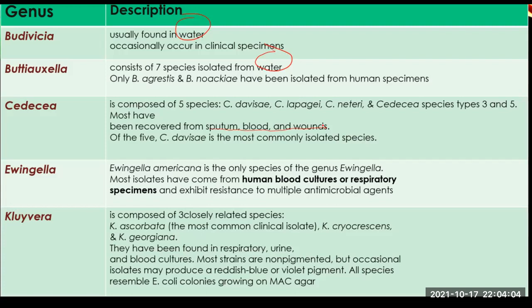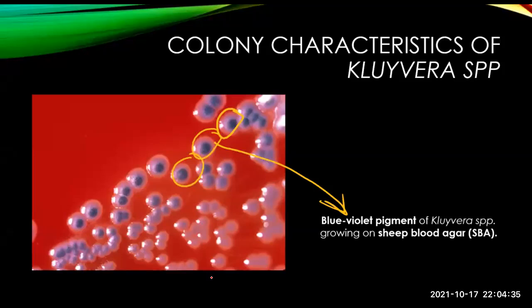Kluyvera is composed of three closely related species, and the most common clinical isolate is K. ascorbata. They have been found in respiratory, urine, and blood cultures. Majority of the strains are non-pigmented, but occasionally the isolates will produce a reddish-blue or violet pigment. All species resemble E. coli colonies growing on MAC agar.